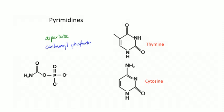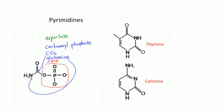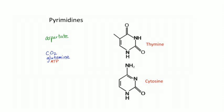For pyrimidines, you use aspartate and carbamoyl phosphate. Carbamoyl phosphate has one carbon from CO2/bicarbonate and one nitrogen from glutamine; the phosphate comes from ATP but doesn't end up in the finished pyrimidine. The four things needed to make pyrimidines are aspartate, glutamine, CO2, and ATP — the last three together are used to make carbamoyl phosphate.